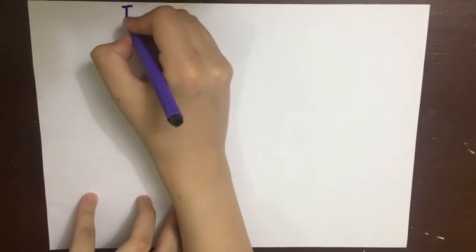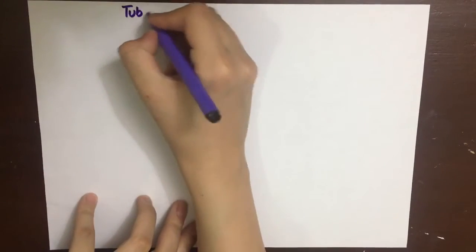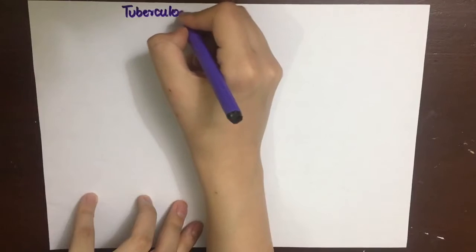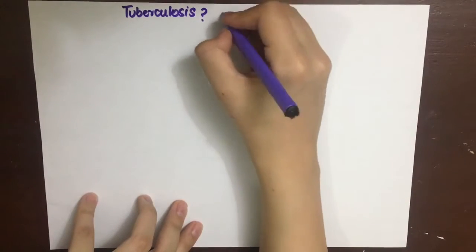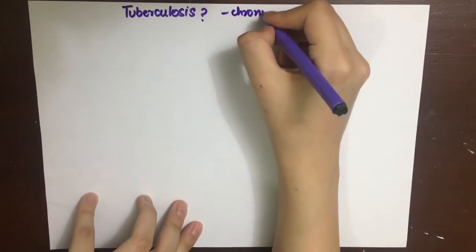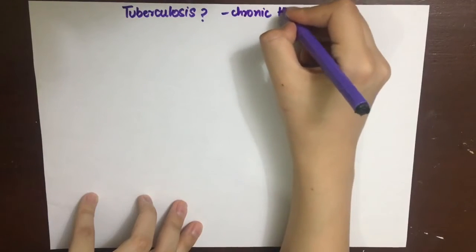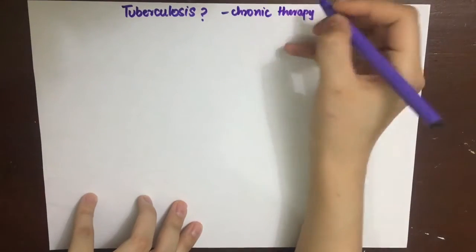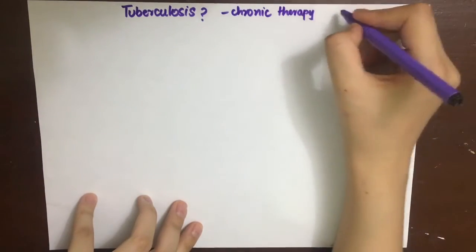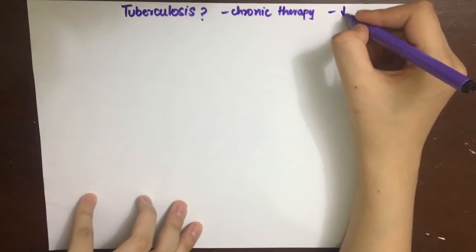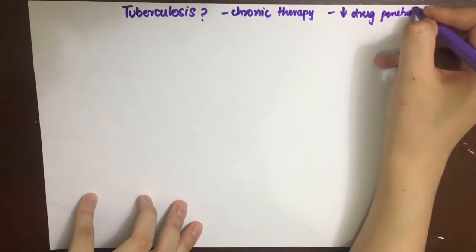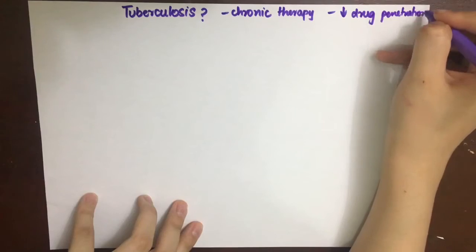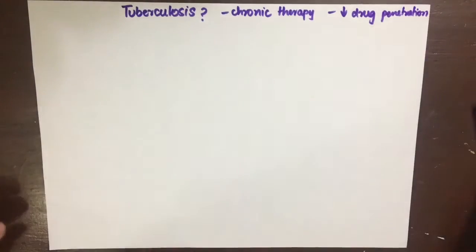TB, or tuberculosis, is a chronic infectious disease caused by Mycobacterium tuberculosis that needs to be treated over a long period of time — months or even years if you are still positive for TB culture. As TB is a chronic disease, the lesion of TB is fibrotic and drug penetration is a problem.